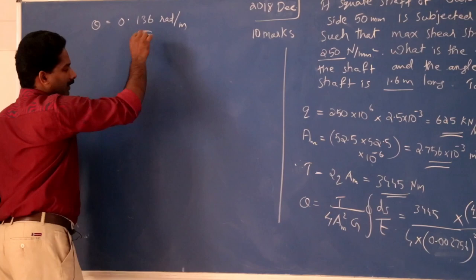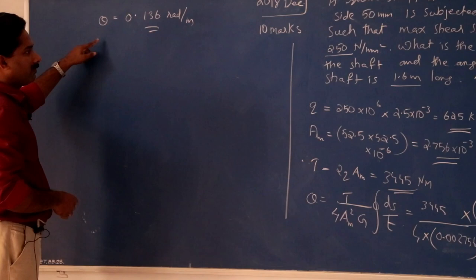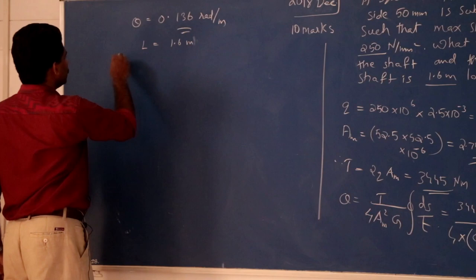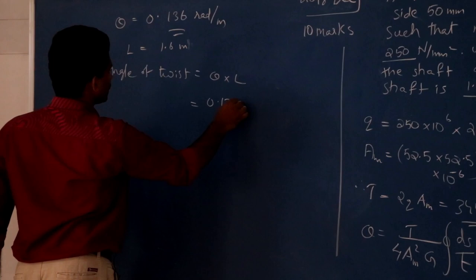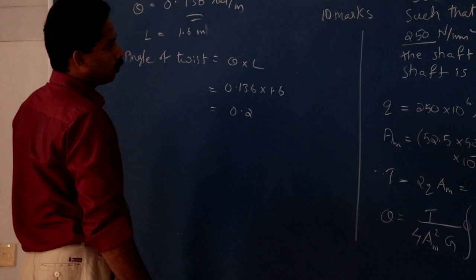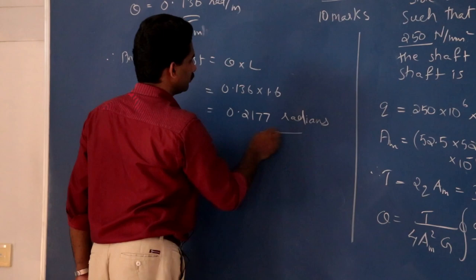So, theta value is 0.136 radians per meter. If the shaft is 1.6 meter long, L is equal to 1.6 meter. Therefore, angle of twist is equal to theta into L — 0.136 into 1.6 is 0.2177 radians. That is the total angle of twist for the entire length of the shaft.